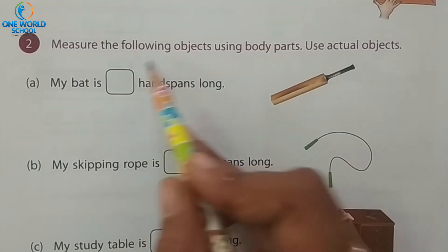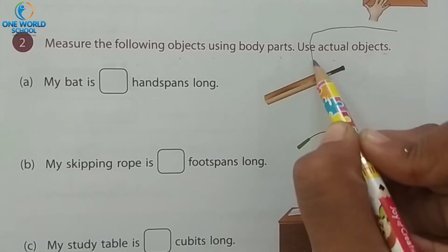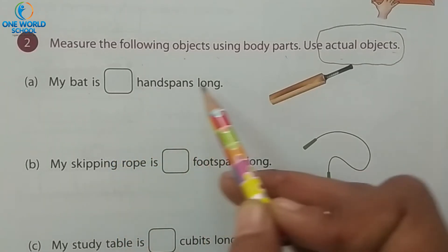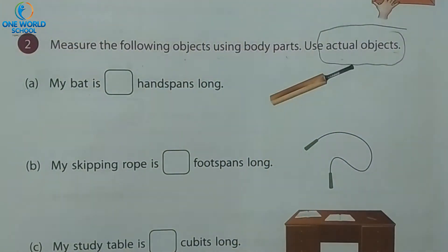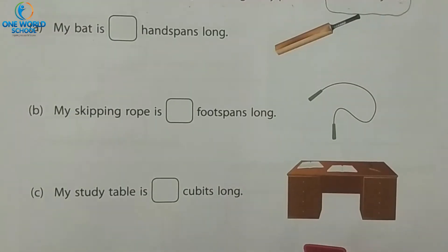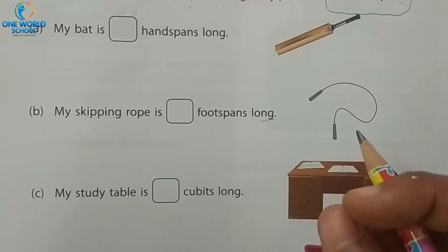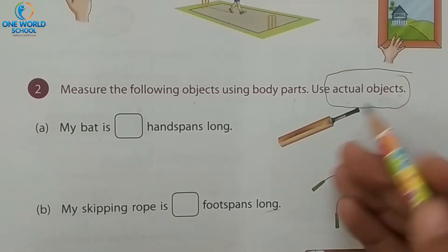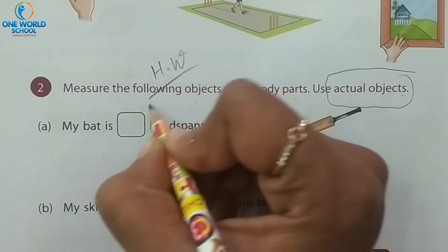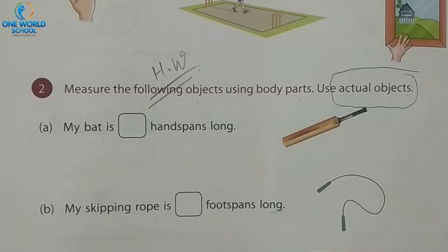Exercise 2: measure the following objects using body parts. Use actual objects. Here, 'my bat is blank hand spans long' — you have to take a bat at home and count how many hand spans long it is. Next: 'my skipping rope is blank foot spans long' — take a skipping rope and count using your foot span. You will use actual objects at home and complete this exercise as your homework.